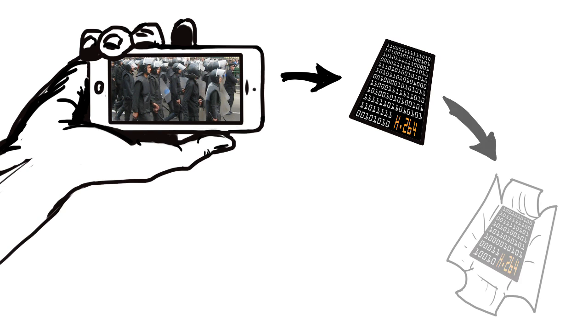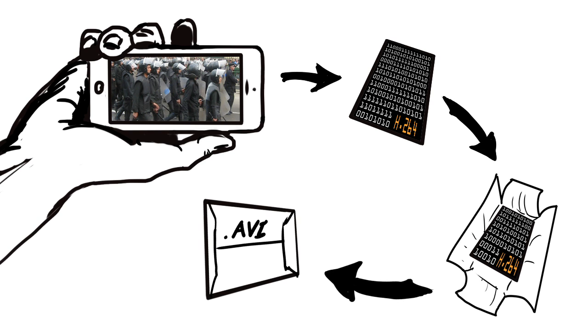The second aspect is how the video data is packaged, which is called the container or wrapper. The way a video is encoded and the way it is packaged is important because codecs and wrappers are designed to support different levels of video quality and uses. Some work better or worse with specific computer tools.